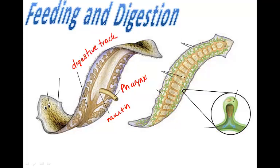Remember, there is only one mouth in flatworms — only one opening. Therefore, waste is also excreted through the mouth.